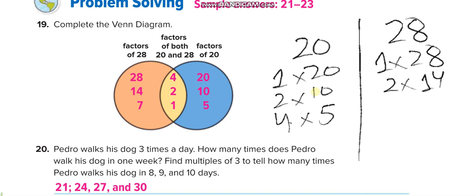For 28 we also have 4×7. So 1, 2, and 4 appear in both — we write those in the middle. For 20 only: 5, 10, and 20. For 28 only: 7, 14, and 28.